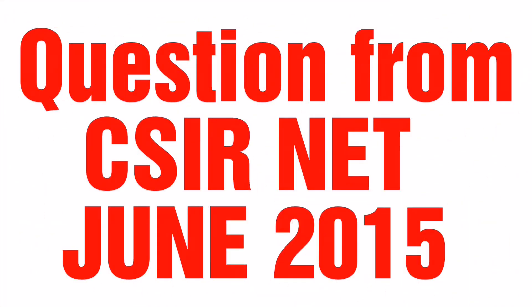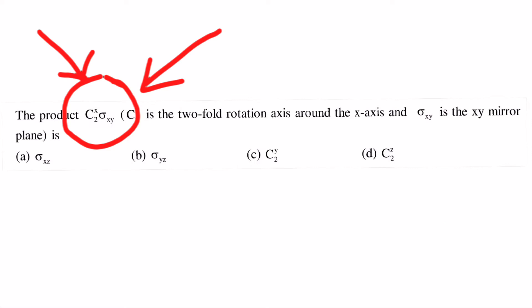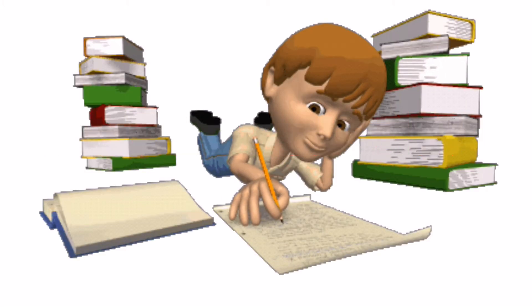Hello friends, in this video we will solve a question from June 2015. The product is where C2x is the twofold rotation axis around the x-axis and this is the mirror plane. In the previous video I explained for such type of question.